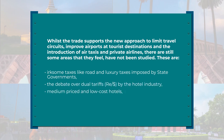These include taxes like road luxury taxes imposed by state governments, and the debate over dual tariffs by the hotel industry — especially after the onset of GST. The hotel industry has been asking for rebates, and hotel GST has recently been reduced from 28% as a maximum slab to 18% for room rates of ₹7,500 and above. Medium-price and low-cost hotels are the need of the day, along with paying-guest accommodations like bed-and-breakfast units and homestays. Many companies like Airbnb and MakeMyTrip have entered the alternative accommodation space in India in a big way, and this restructuring will help tourism planners manage travel budgets while the infrastructure catches up.